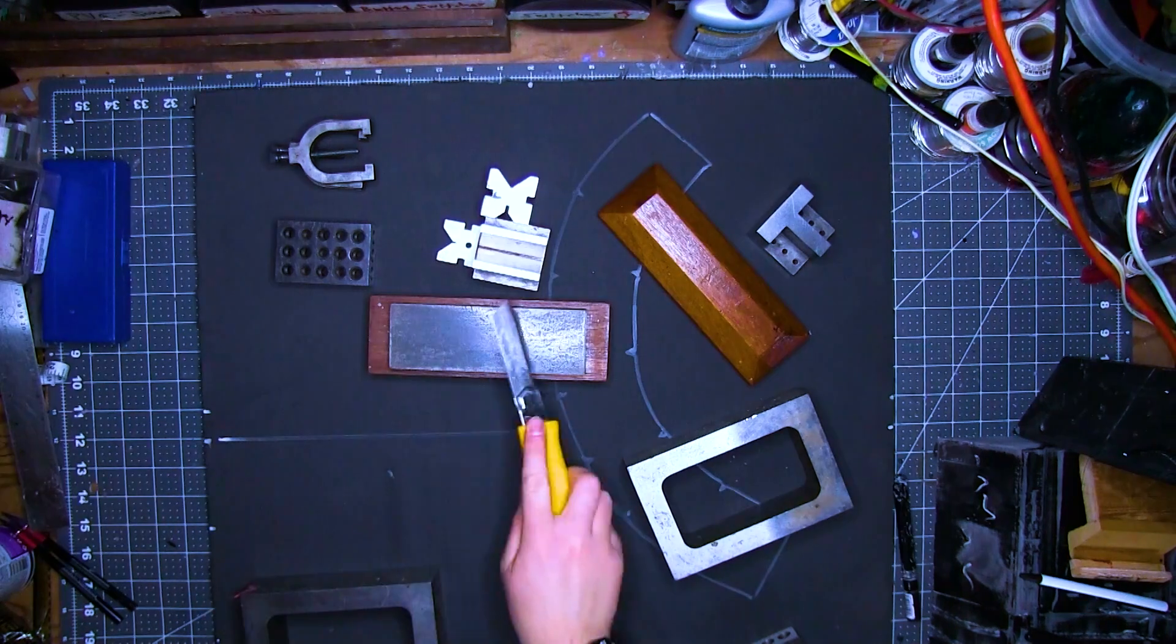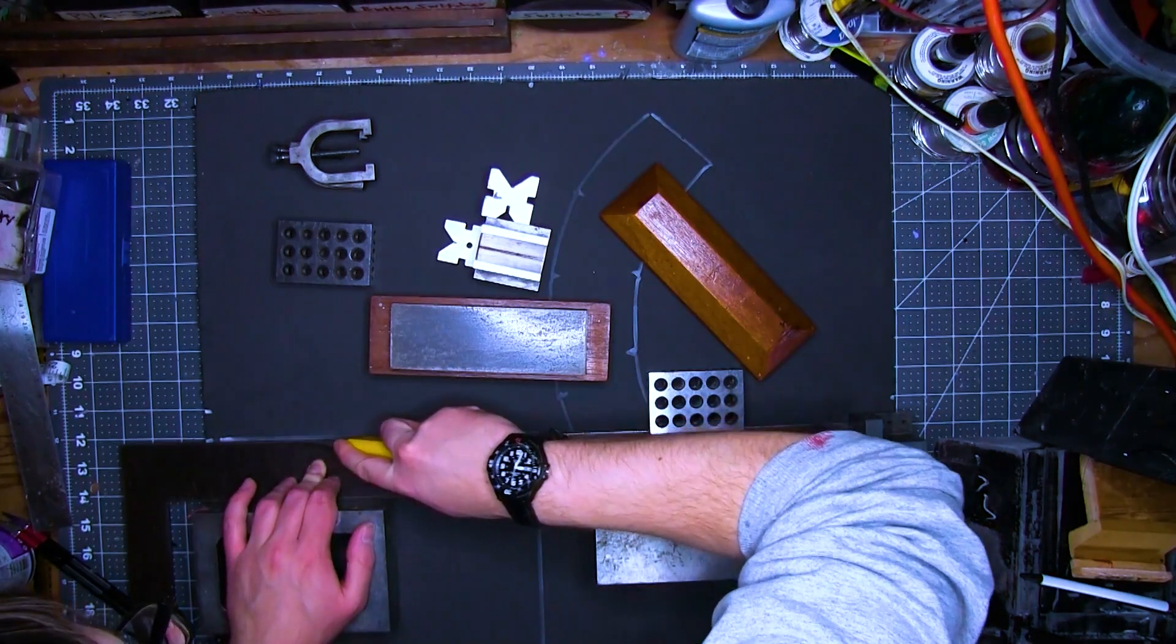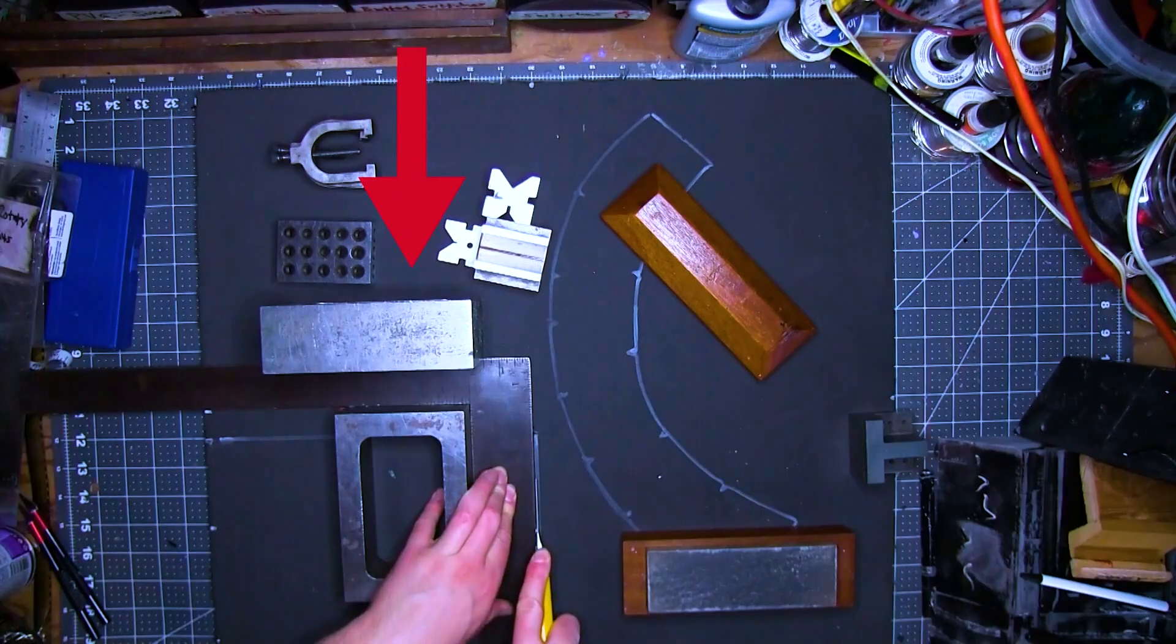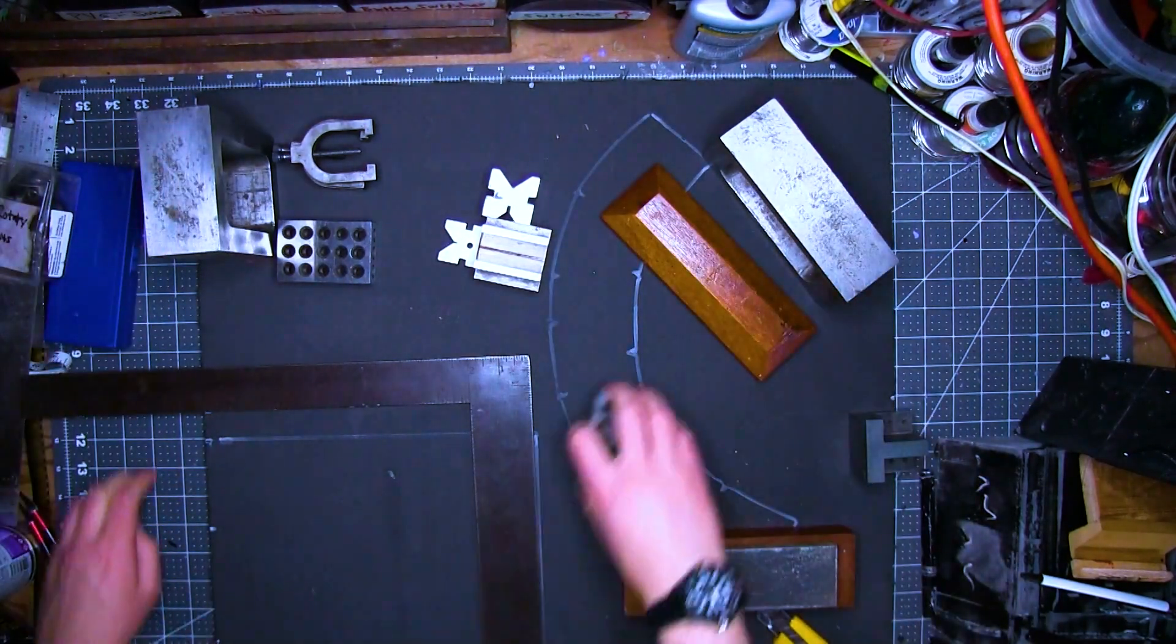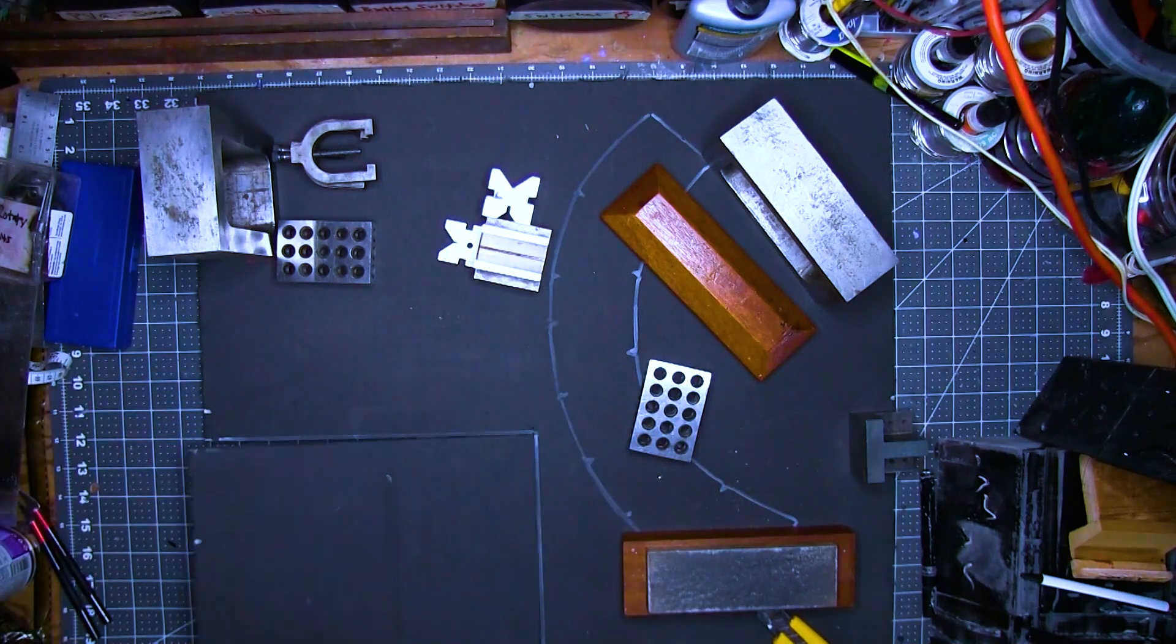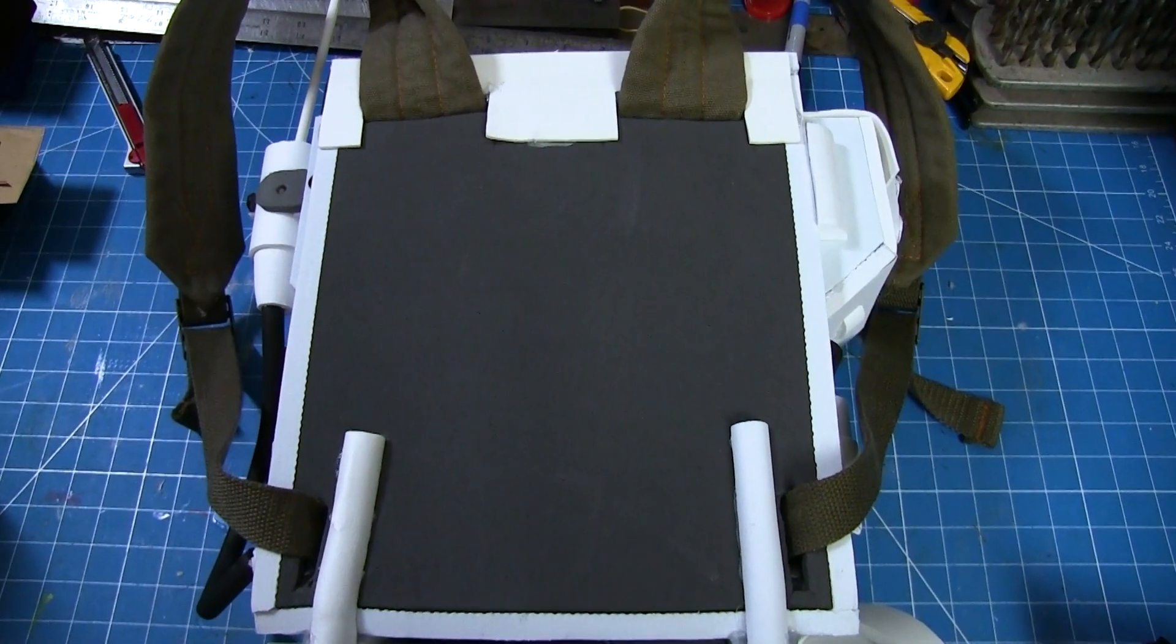I traced a square onto the foam with a paint pen. Then I used a sharpened work knife to cut out the square. Notice I'm using machinist blocks to keep my carpentry square in place. It takes a lot of pressure to cut through the foam, and I don't want it to move around. This is for the main back panel. Eventually, I'll need to cut holes for straps.